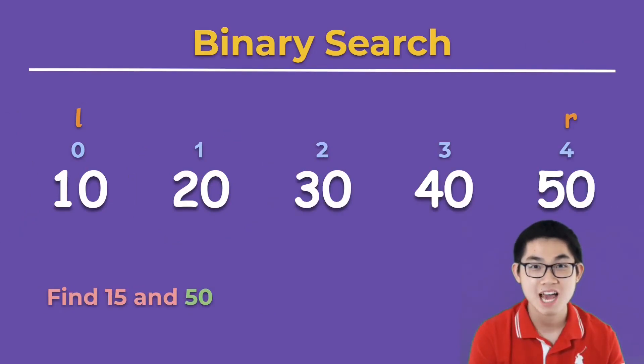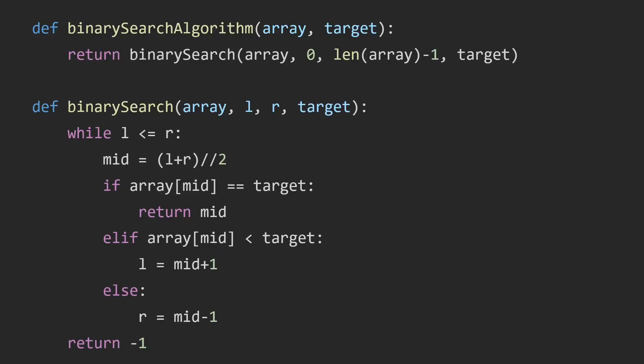For practice I would like you to find number 15 and 50 using binary search. Let's take a look at the Python code. So we put L at index 0 and R at the end of the array.